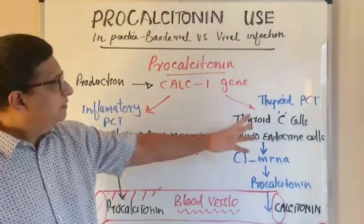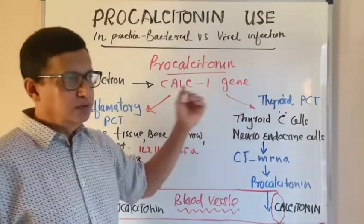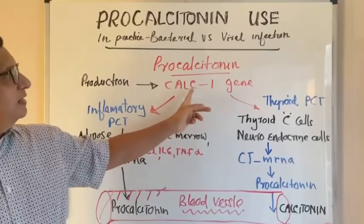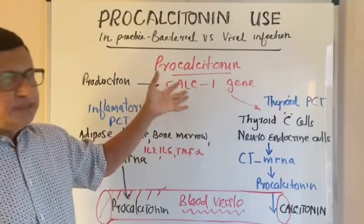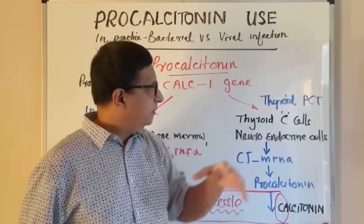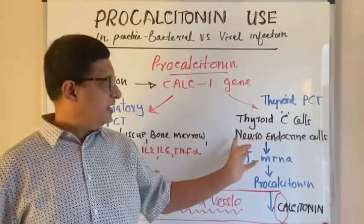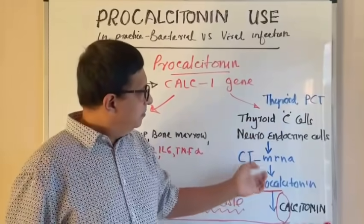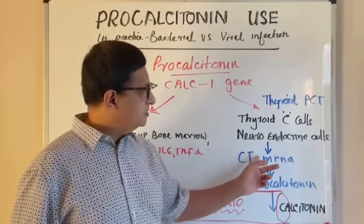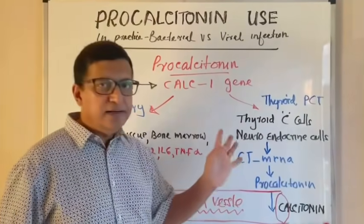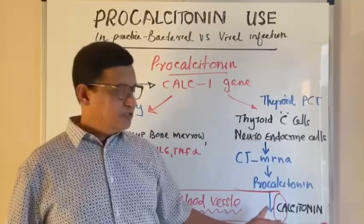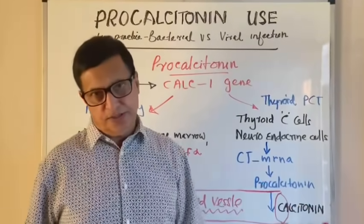There are two pathways for procalcitonin production in two occasions. In the normal pathway, with the effect of the CALC1 gene, thyroid C cells and neuroendocrine cells, especially in the lungs and the gut, produce procalcitonin as a result of calcitonin mRNA release, and then procalcitonin is released into the blood circulation as calcitonin.